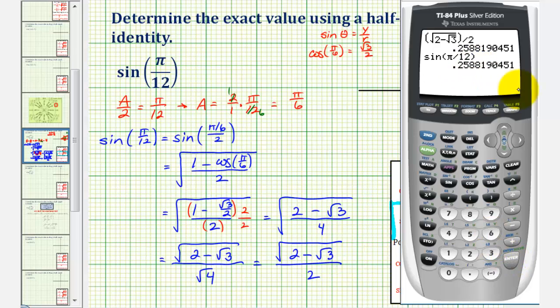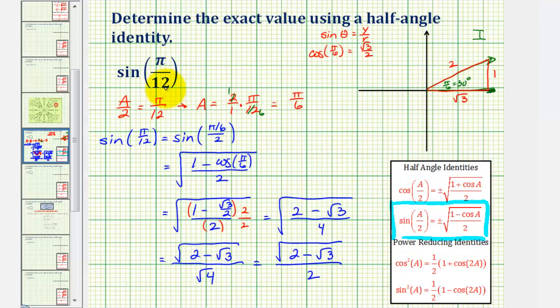There's one more thing I do want to point out though before we go. We did find the exact value of sine pi over twelve, or sine fifteen degrees, using a sum or difference identity as well. Though the result did look different, it is the same exact value. So let's do a quick comparison.